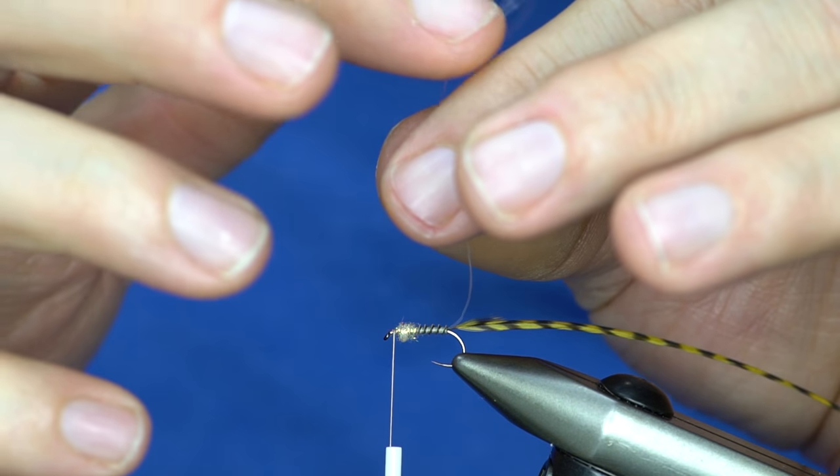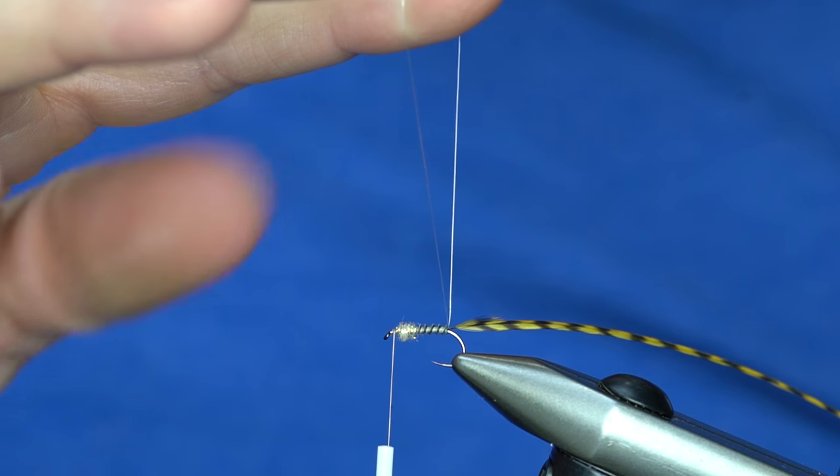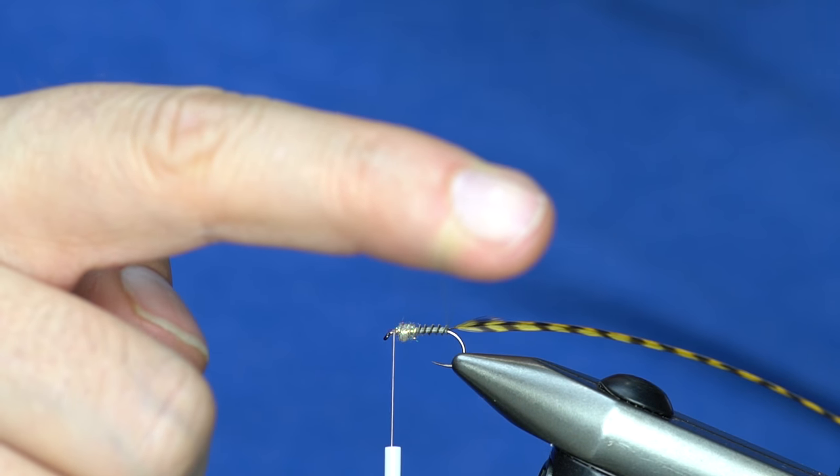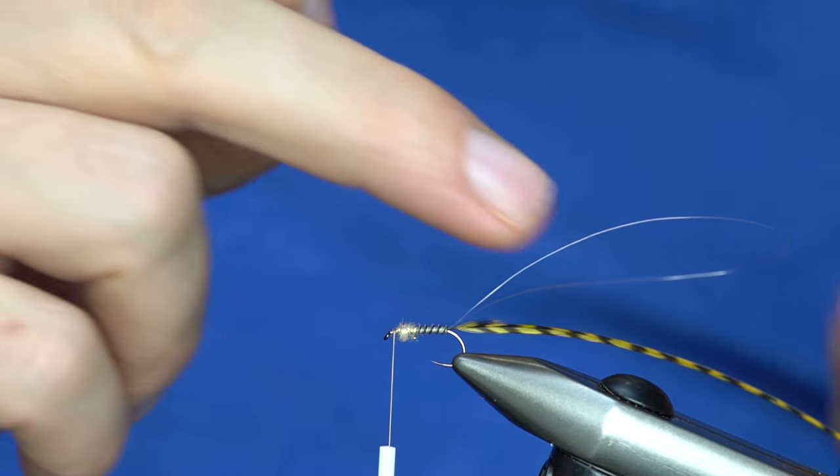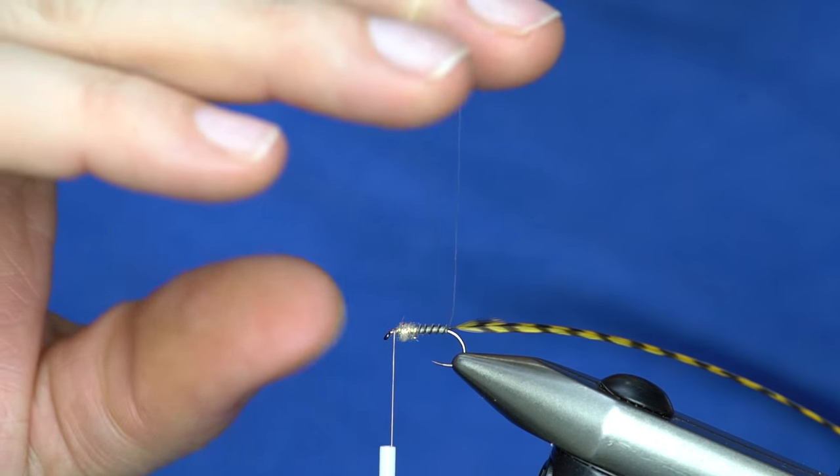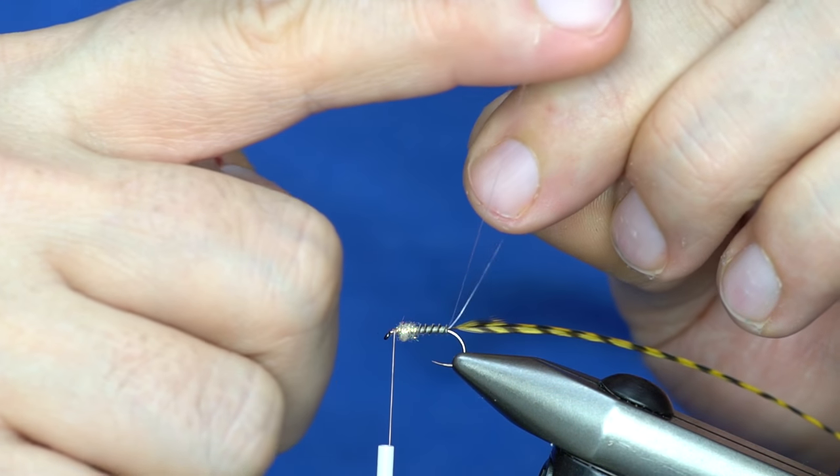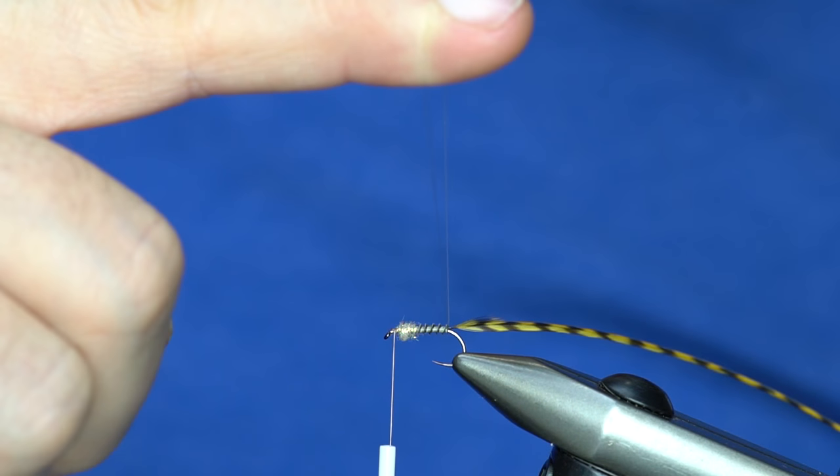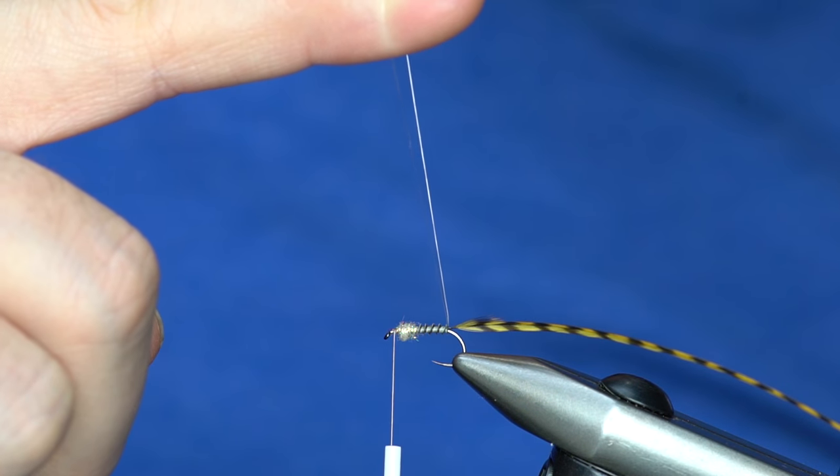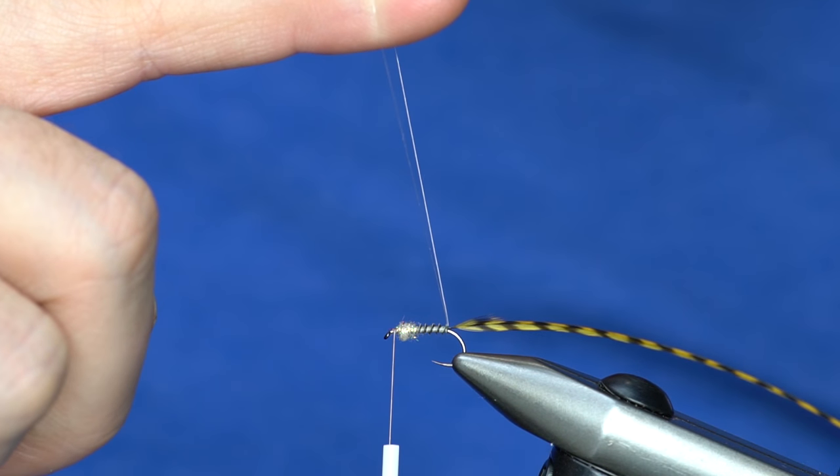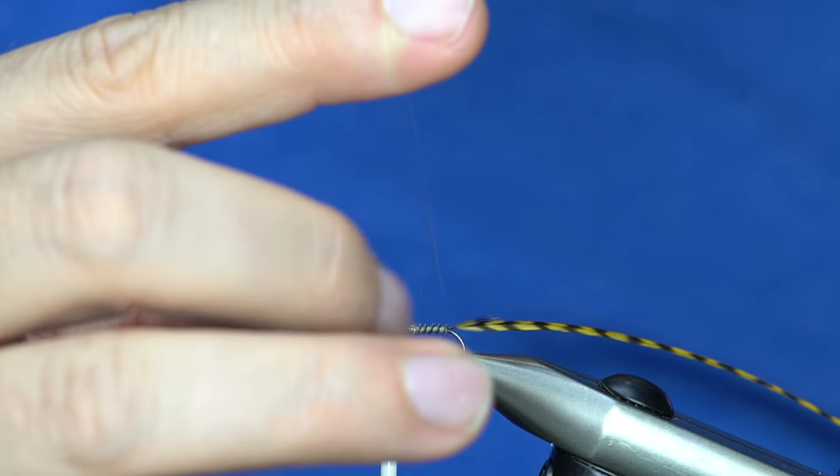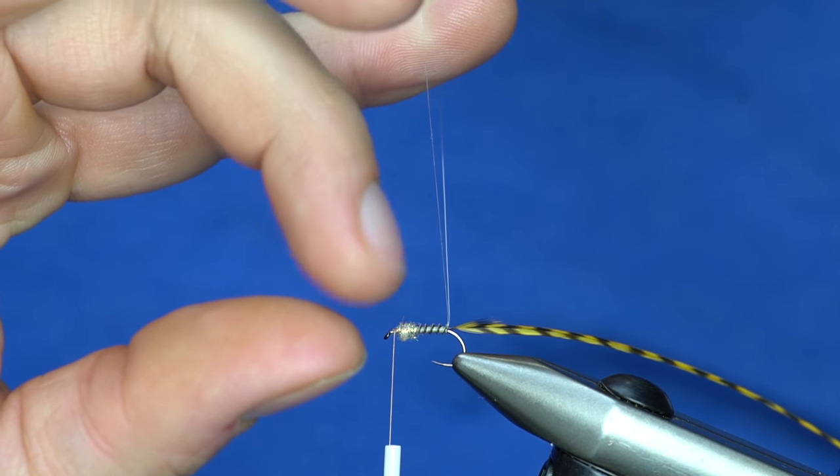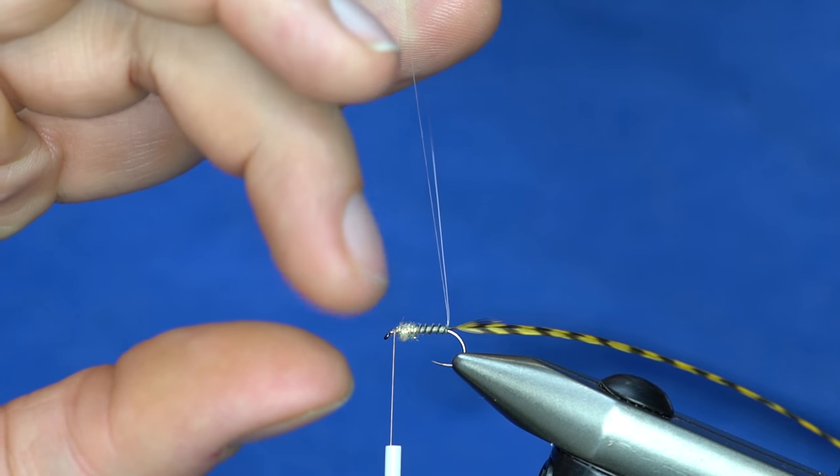And then what you do, and you kind of have to choose what you want to do, but I use my index finger. You can also use your middle finger if you want. It just depends on what you feel most comfortable wrapping this with. So I have my index finger like so, and then you just take your hackle hand. You've got your middle finger and thumb.